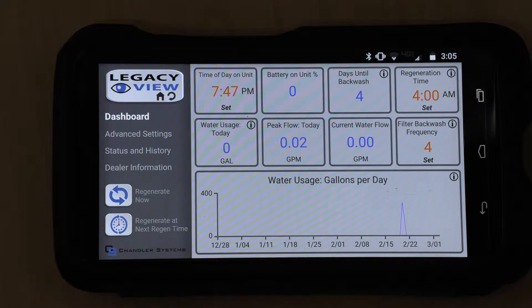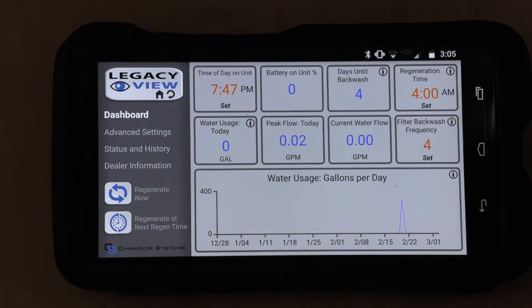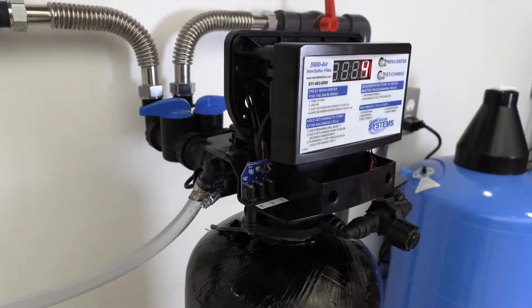So we're going to go into the regeneration process and start with a backwash. When you have a new system like this, you need to perform the backwash rapid rinse cycle on the media several times to get all the fine dust and particles out.